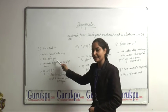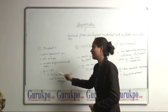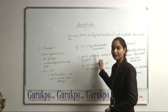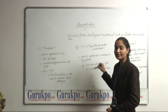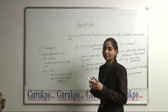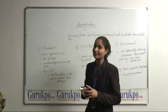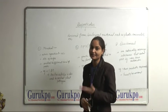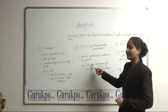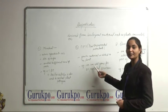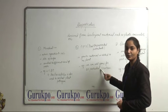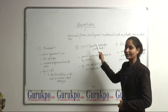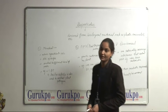The second category of biopesticides are PIPs, plant incorporated protectants. In this, we add genetic material to the plant and the plant itself produces the pesticidal substances. For example, we can add the gene for the Bt pesticidal protein. These are PIPs, plant incorporated protectants.